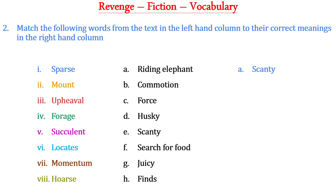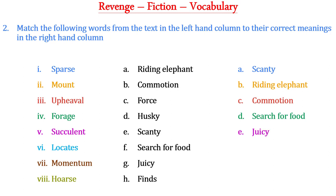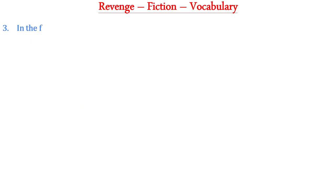The correct meaning of 'mount' is 'riding elephant'. The correct meaning of 'upheaval' is 'commotion'. The correct meaning of 'forage' is 'search for food'. The correct meaning of 'succulent' is 'juicy'. The correct meaning of 'locates' is 'finds'. The meaning of 'momentum' is 'force', and the meaning of 'horse' is 'husky'.